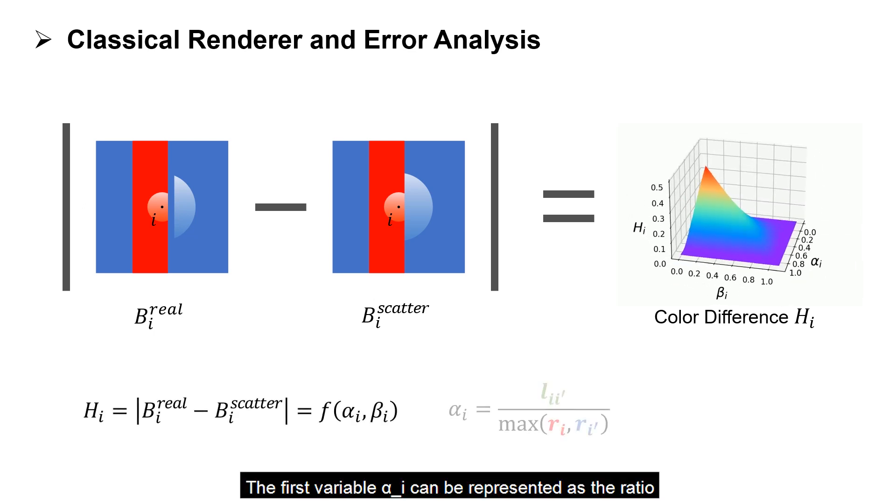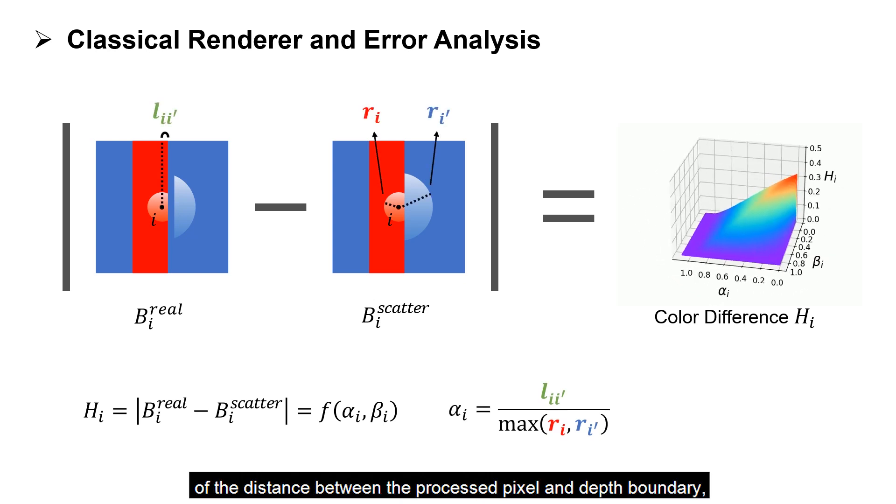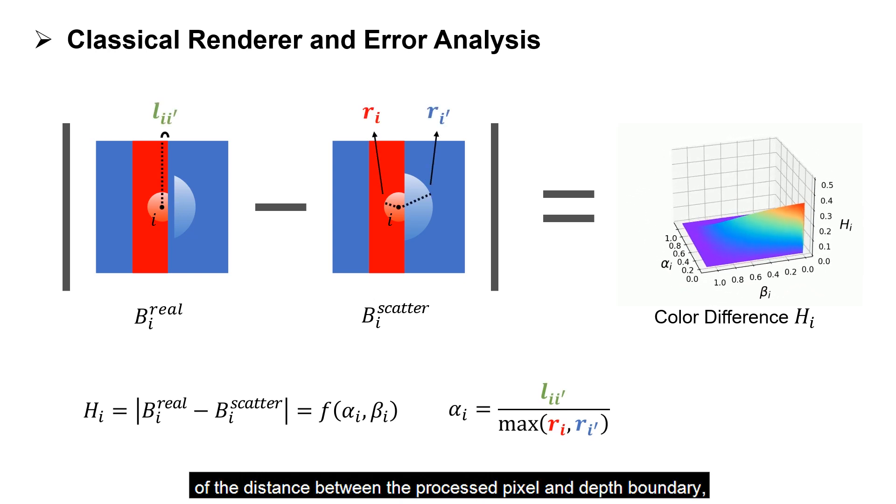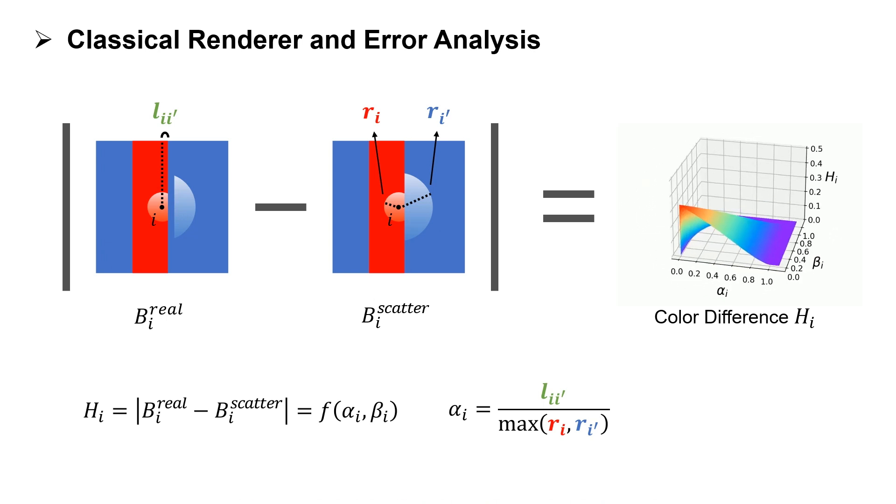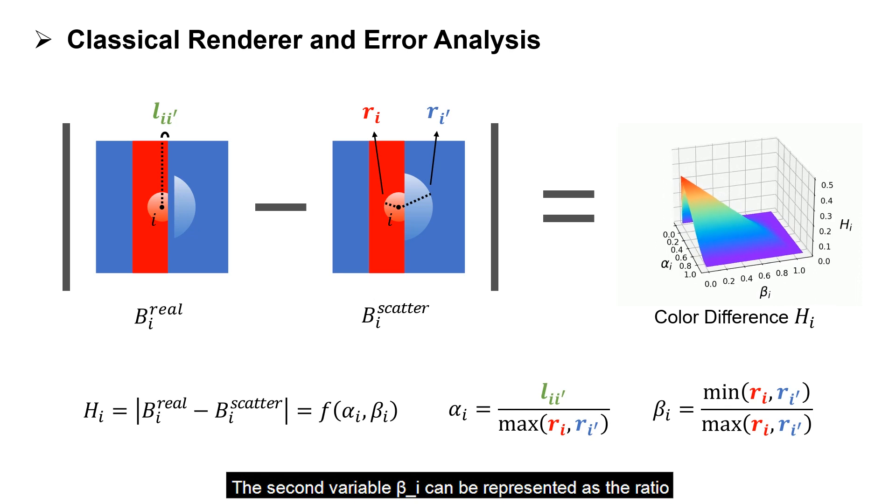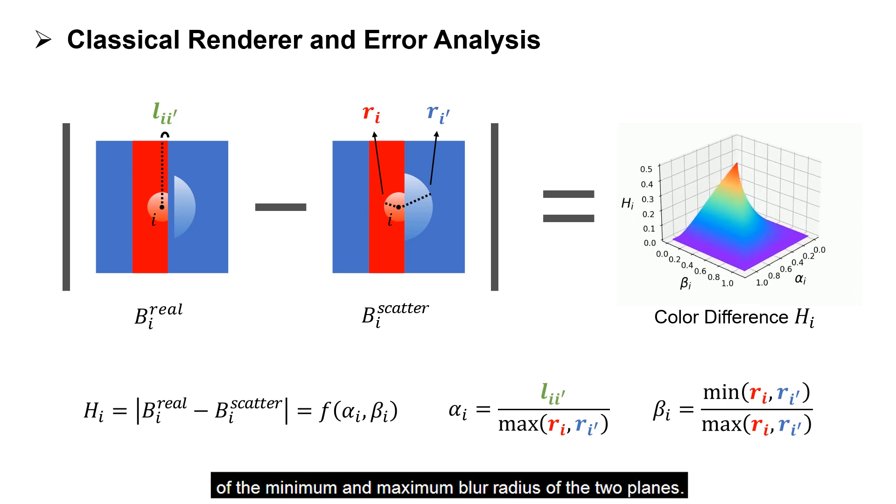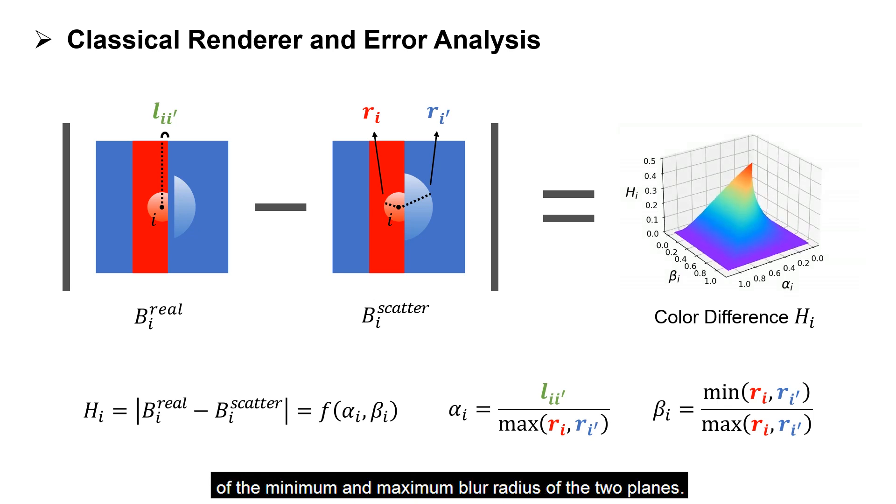The first variable alpha_i can be represented as the ratio of the distance between the process pixel and depth boundary, and the maximum blur radius of the two planes. The second variable beta_i can be represented as the ratio of the minimum and maximum blur radius of the two planes.